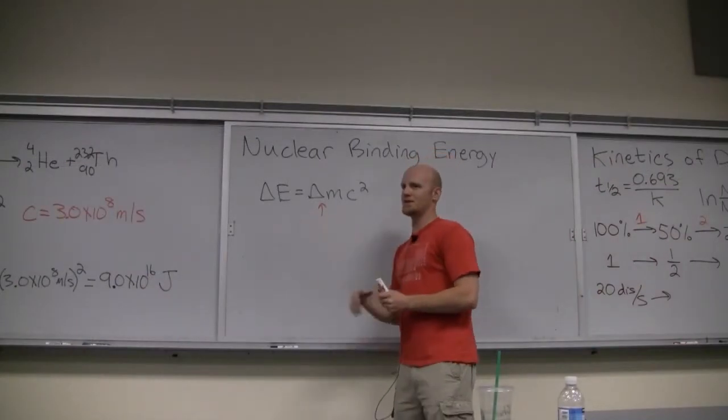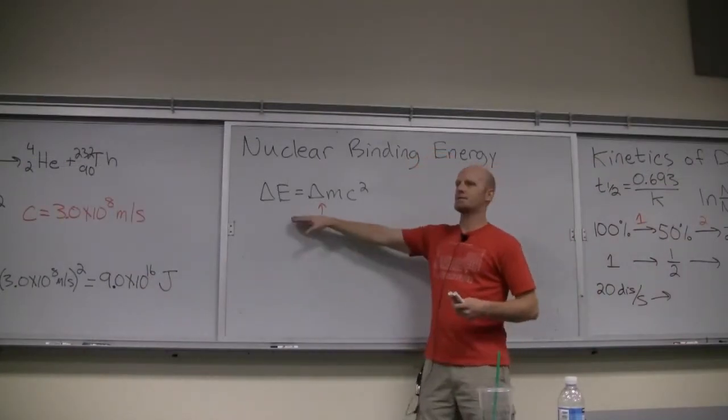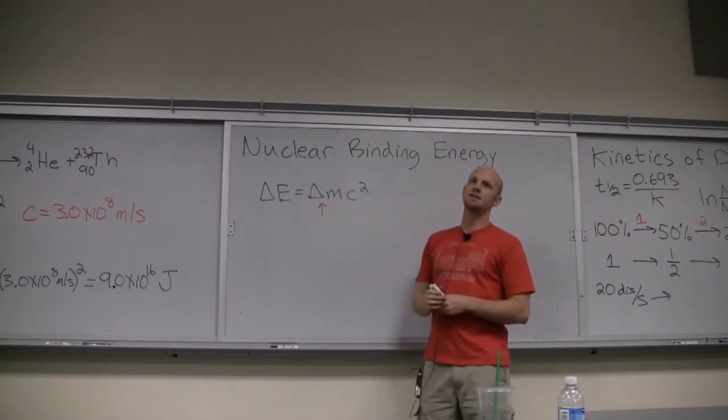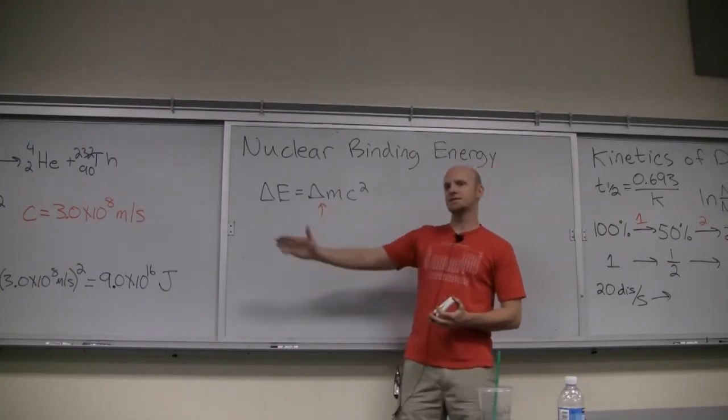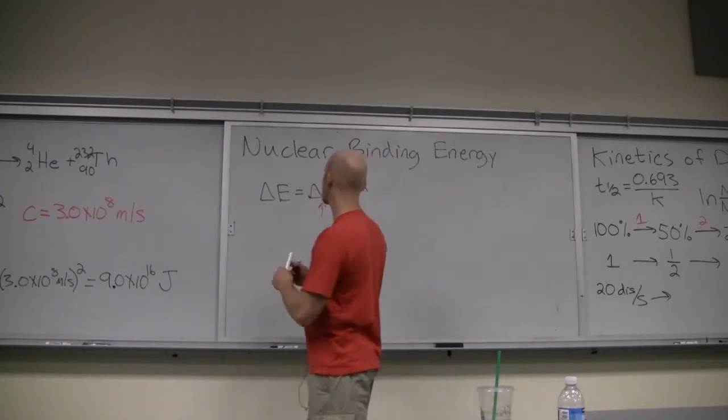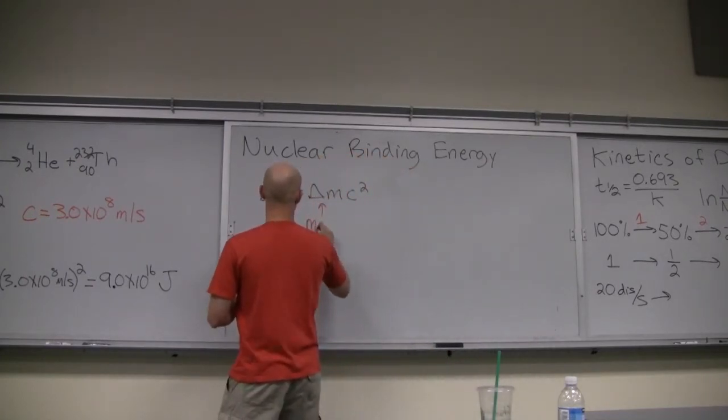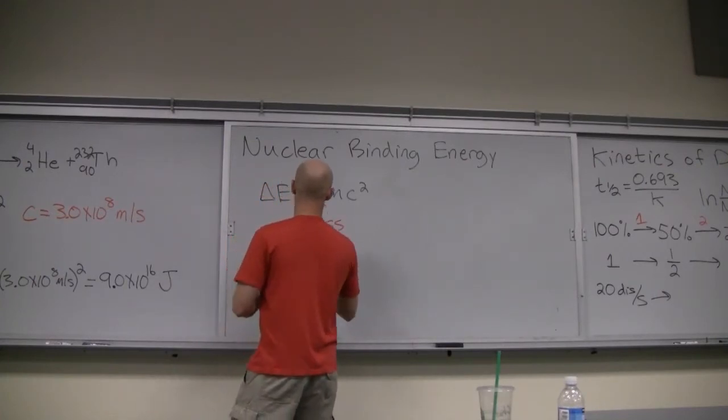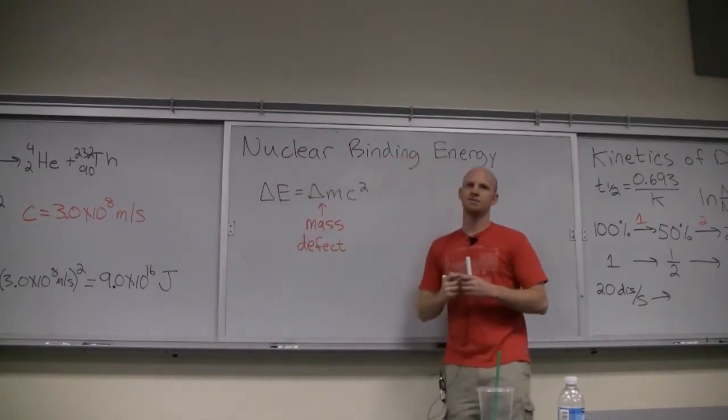So nuclear binding energy. We're going to talk about the same equation. Here I'm really going to call it delta M, a difference in mass, which really I could have called it the same before we talked about chemical reactions. We call this delta M, the difference in mass, the mass defect.